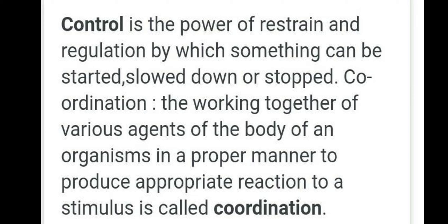If we talk about digestion, various organs are involved in our digestive system — for example, the esophagus, stomach, liver, small intestine, and large intestine. All these organs work together to digest food in a synchronized manner. That is coordination. Our digestive system is coordinated, our respiratory system, our excretory system — all systems are working together. Our digestive system enables us to digest food, and that digested food is absorbed by the blood, which transports food and oxygen to each and every cell of the body.